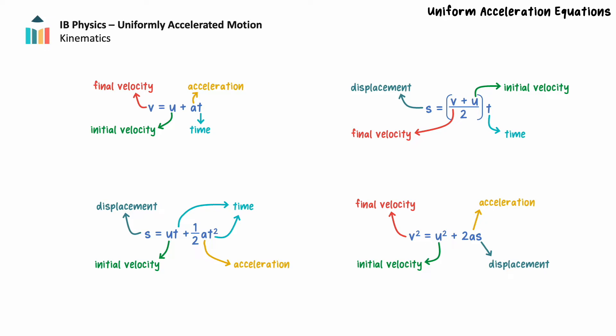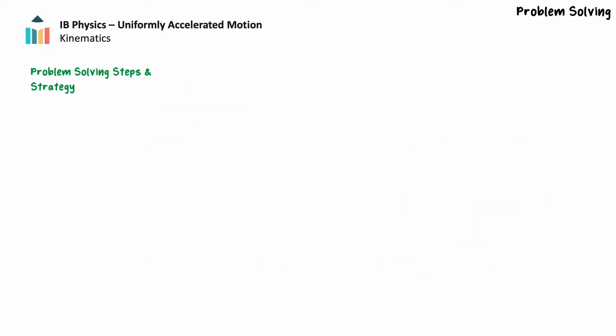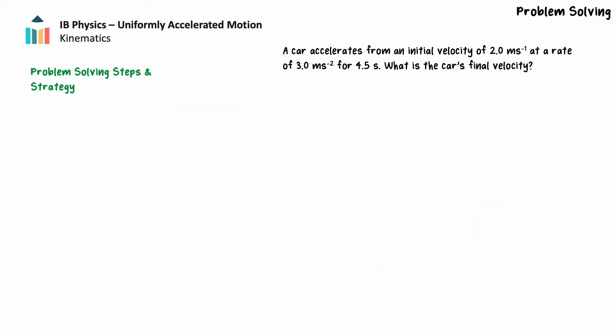The derivation of these formulas is beyond the scope of this video, which will focus on applying these formulas to solve problems. We're going to walk through an example as we introduce a 7-step problem-solving approach. Following these steps will ensure that any problem involving uniformly accelerated motion is easily solved. We need to solve the following problem: a car accelerates from an initial velocity of 2.0 m/s at a rate of 3.0 m/s² for 4.5 seconds. What is the car's final velocity?